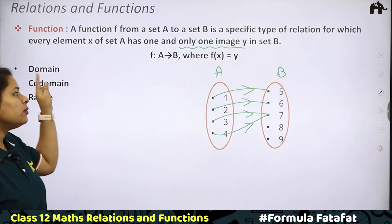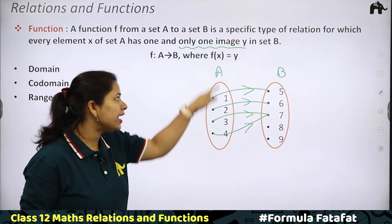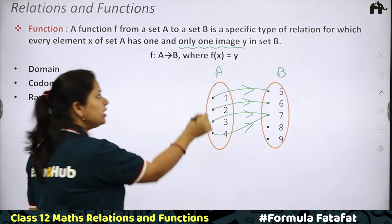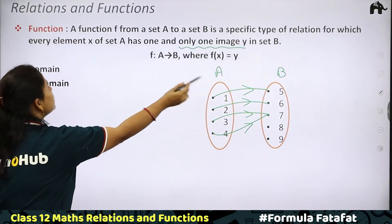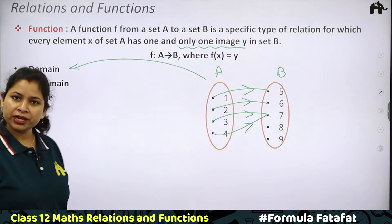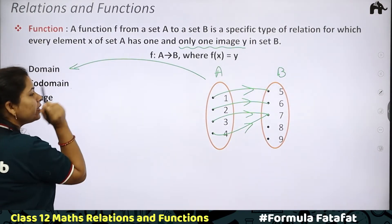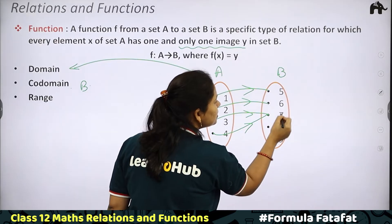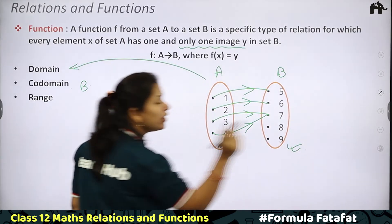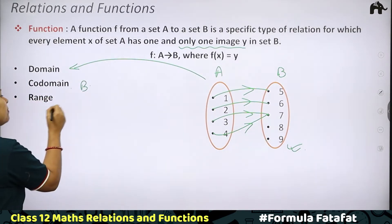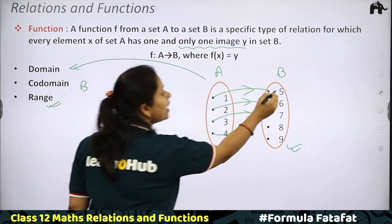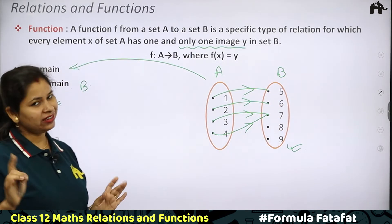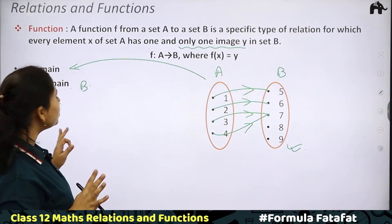What does domain mean? All elements of set A are the domain. What is the co-domain? The co-domain is all elements of set B — for example, elements 5, 6, 7, 8, 9. When I talk about range, the range is only the actual images — for example, only 5, 6, and 7 if only those are mapped to. So the image set is called the range. This is very important.